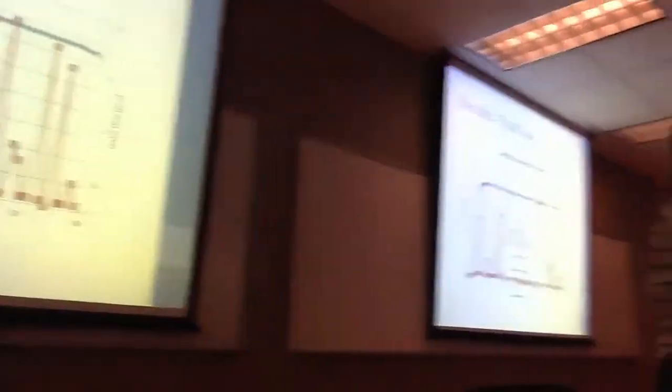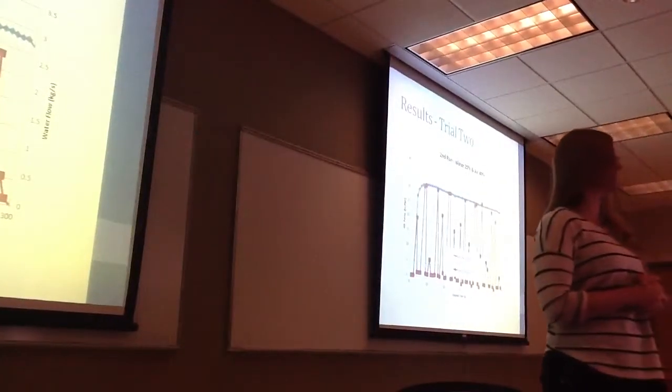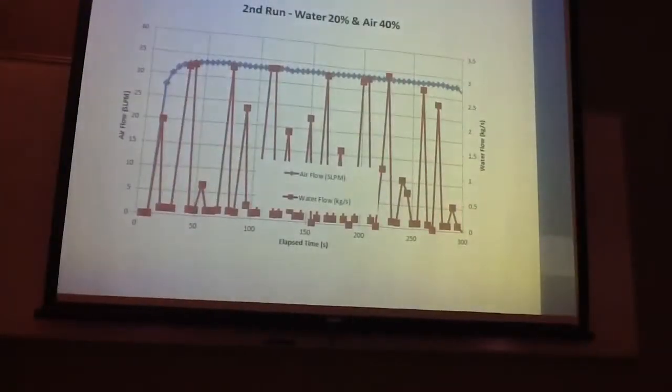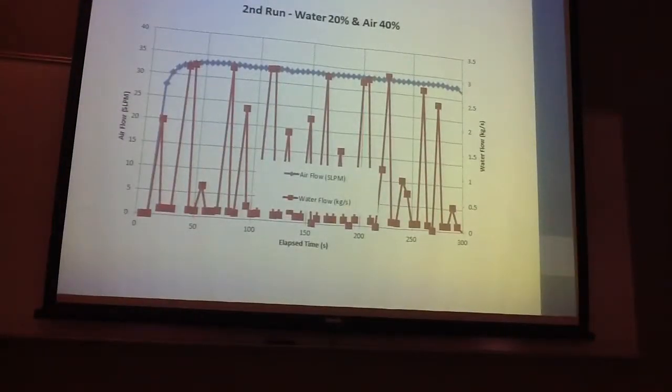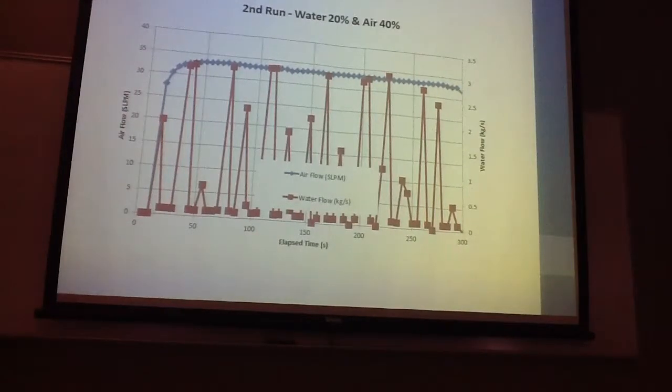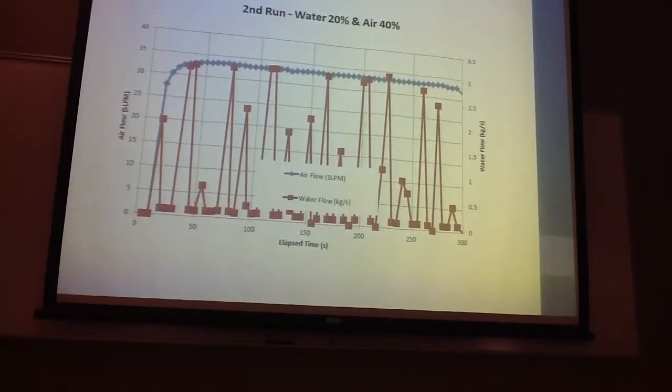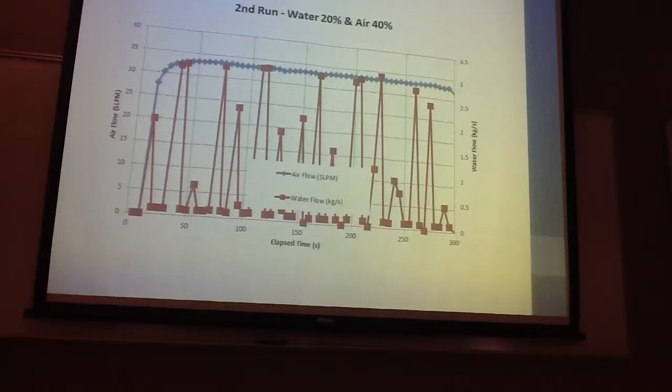The next trial we ran, we put the water valve at 20% and kept the airflow at 40%. For these two trials, we could hear the water valve clicking on and on, so that has led us to believe that it is sticking quite a bit, which may be what is giving us this result of the fluctuating water flow, and our airflow is still remaining pretty constant.